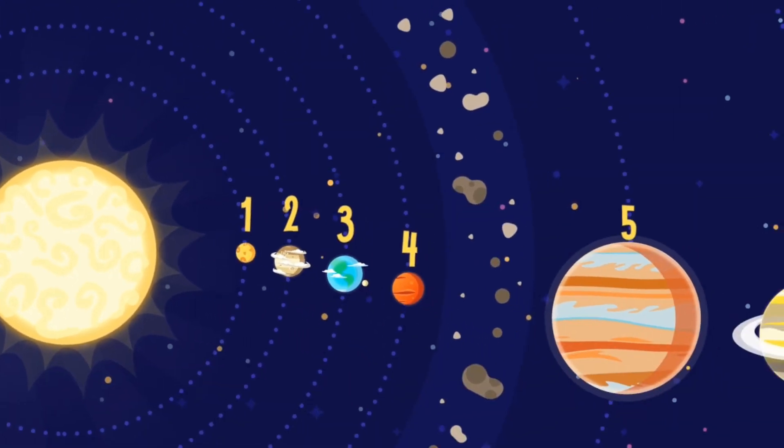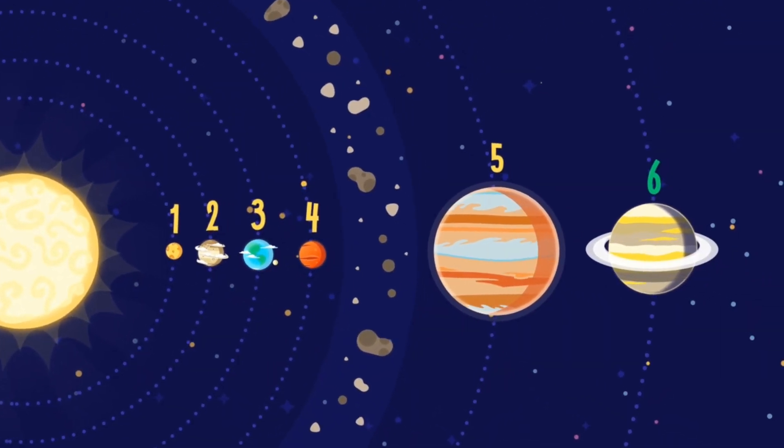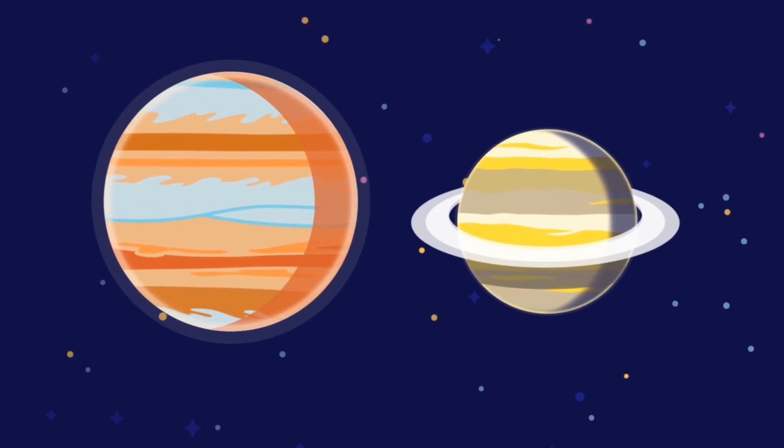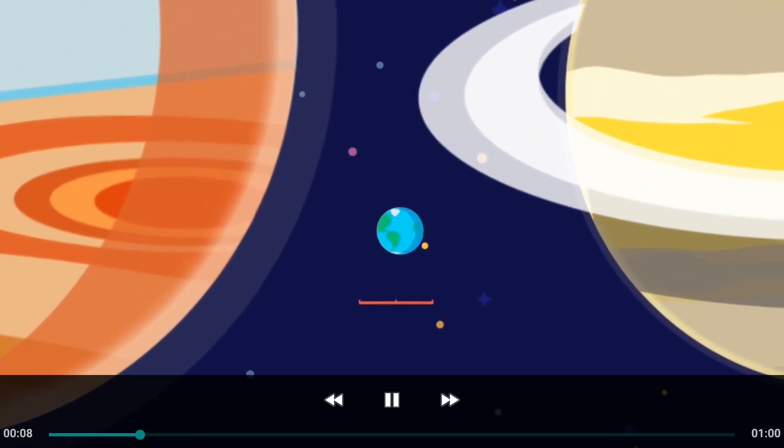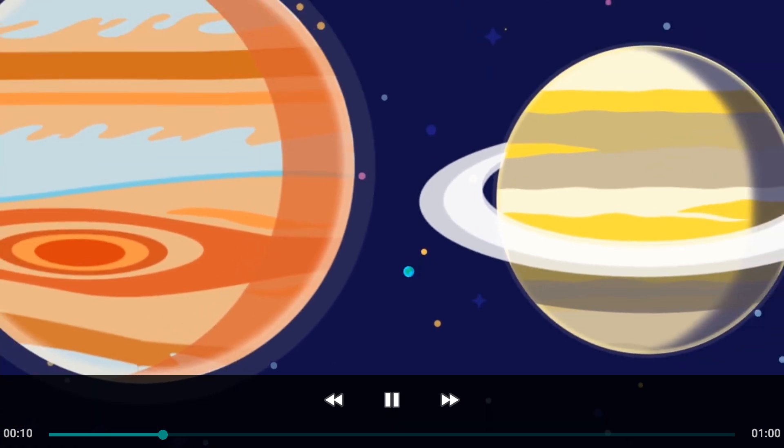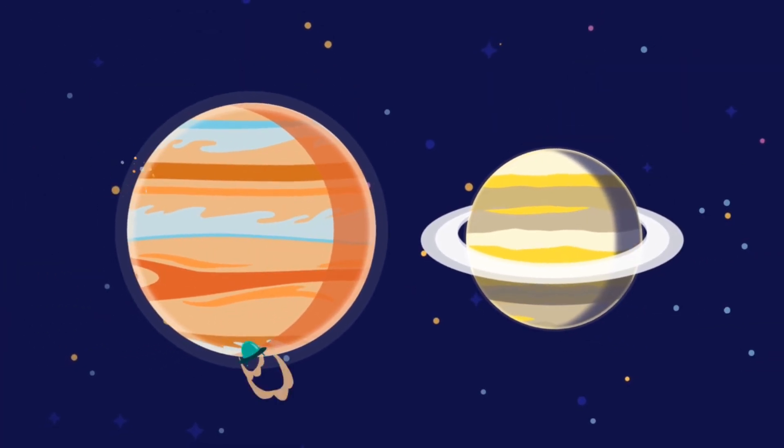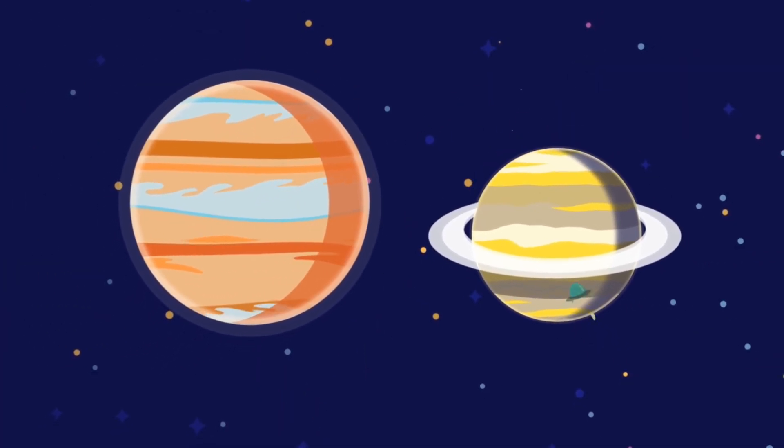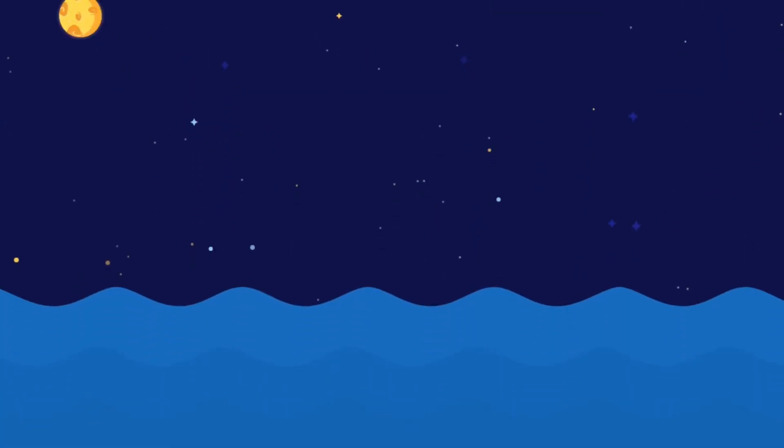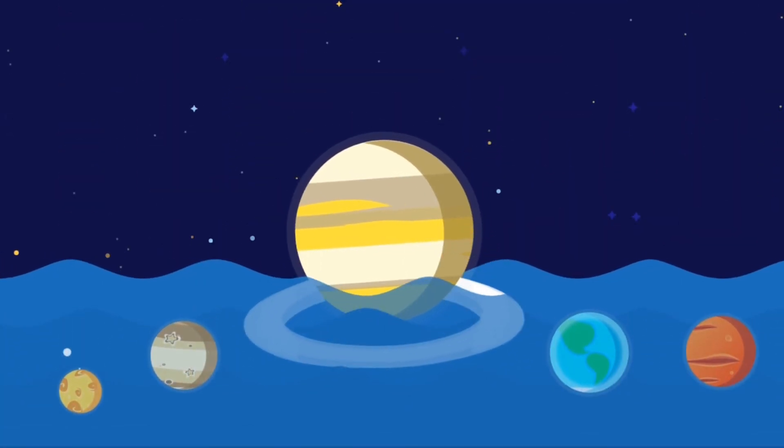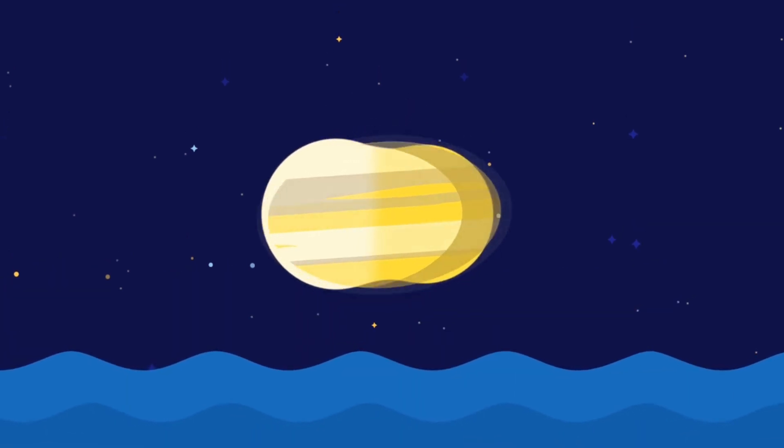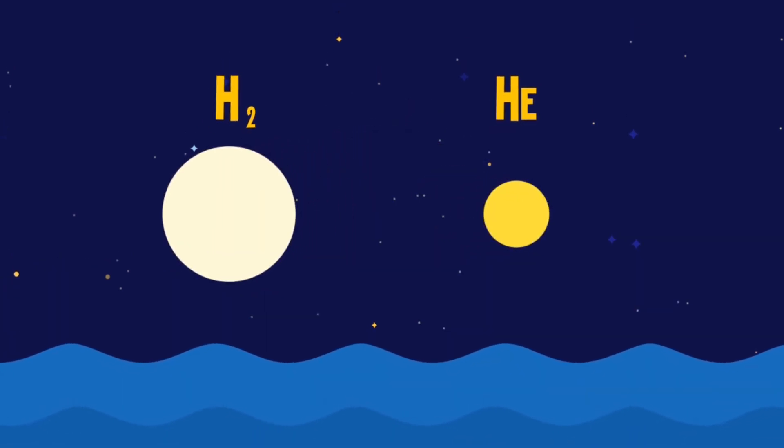Saturn is the sixth planet from the Sun and the second largest planet in the solar system. It belongs to the so-called gas giants, which consist mainly of various gases and do not have a solid surface. If you could put Saturn into water, it would float to the surface, because hydrogen and helium, which make up a large part of the planet, are lighter than water.